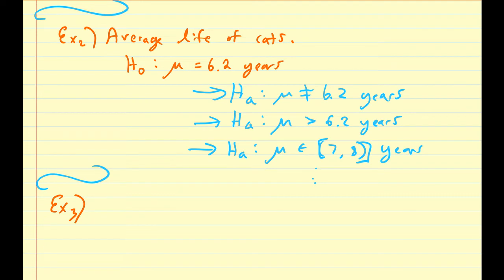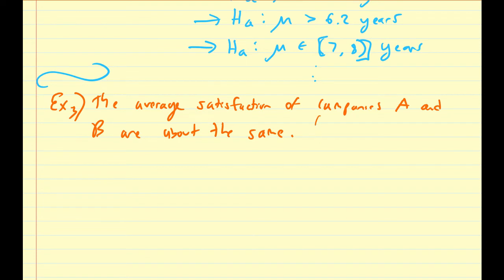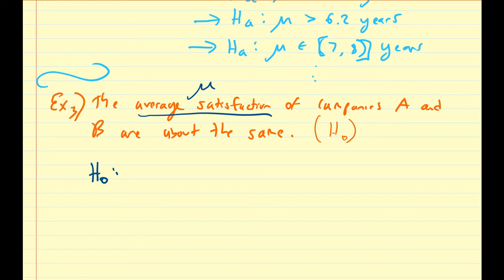Another type of null and alternative hypothesis setup is when you compare different sets. Let's assume the average satisfaction of companies A and B are about the same — that would be the null hypothesis. In mathematical notation, let mu_A and mu_B represent the average satisfaction for companies A and B respectively. The null hypothesis states that mu_A and mu_B are about the same, using approximately equal to or equal to depending on how precise you want to be.